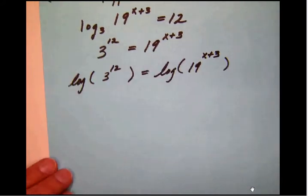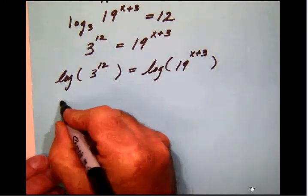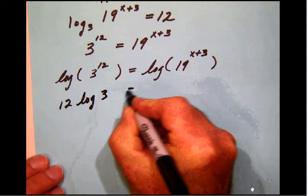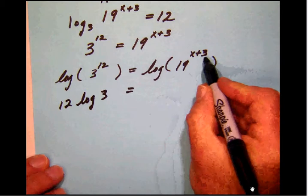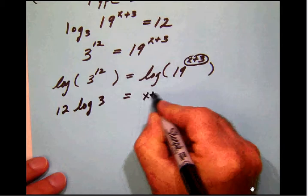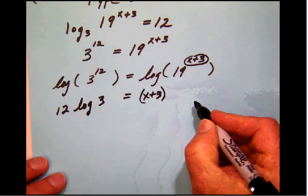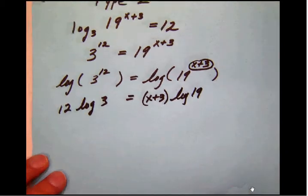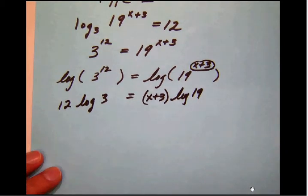Now, applying that third rule says we can bring these powers down front. So we're going to have 12 times the log of 3, and then that is equal to, now be careful here because we're going to bring this entire exponent down. That's going to be x plus 3, and I'm going to carry that in parentheses, times log of 19. And we'll see the need for that here in a second.